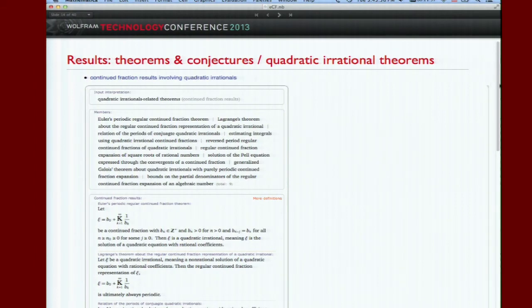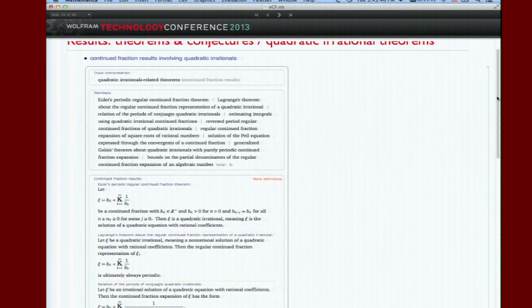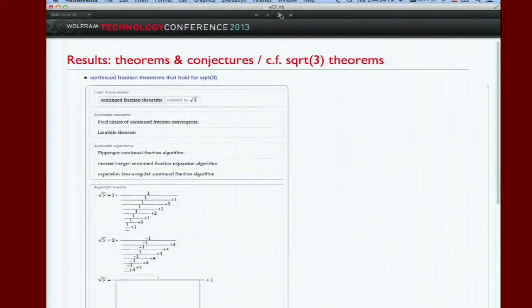Here's an example of what I was mentioning before. You know that there's some theorem about quadratic irrationals involving continued fractions that you like, but you can't remember what it is. Well, you just say, natural language, tell me continued fraction results involving quadratic irrationals. And this isn't all of them, but this is the ones we know. And this is probably a good subset of what there is out there because we've gone through a lot of papers. And we can entrain them all. We can give you more and so forth. So you're kind of getting the idea.